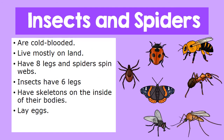Now we're going to look at insects and spiders. Insects and spiders are cold-blooded. They live mostly on land. Insects have six legs, while spiders have eight legs and spiders spin webs. They have skeletons on the outside of their bodies and they lay eggs.